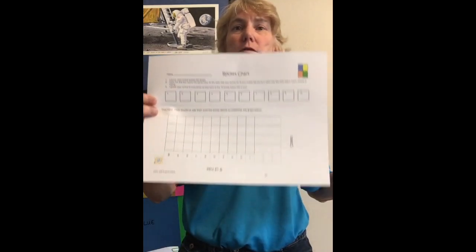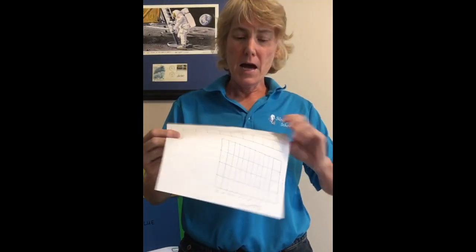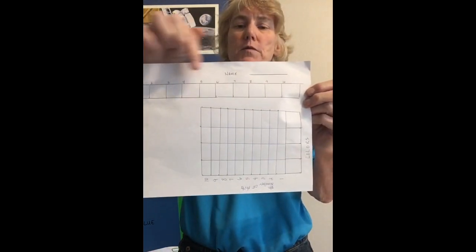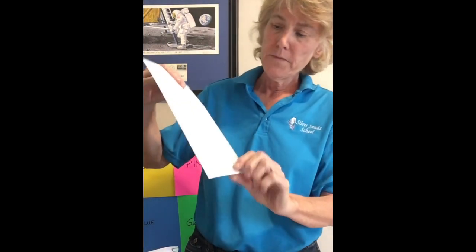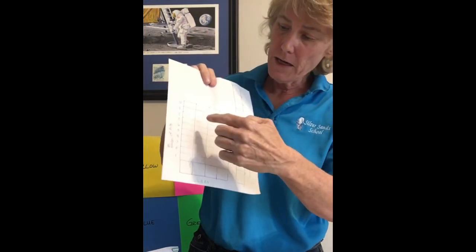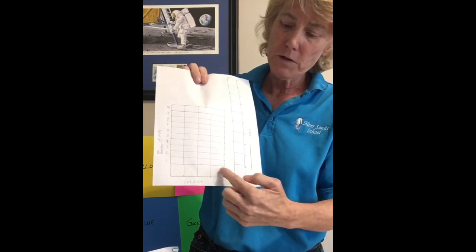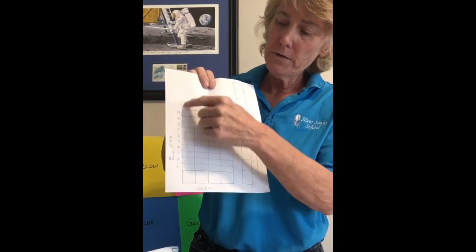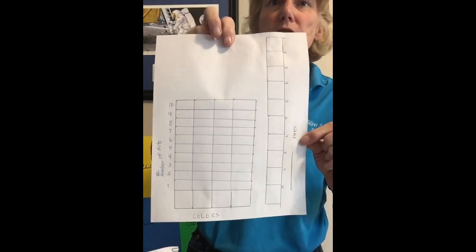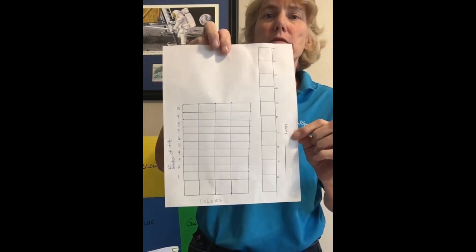The other sheet you'll need from Mr. Cheon's assignment page is the rocket chart so we can make our bar graph. If you're not able to print this off, that's OK — just draw ten boxes labeled one through ten, and make a bar chart with eleven boxes going down and four across for your colors, numbered one through ten. You can make your own at home if you're not able to print it off.